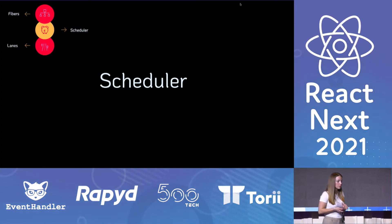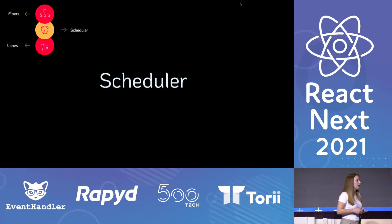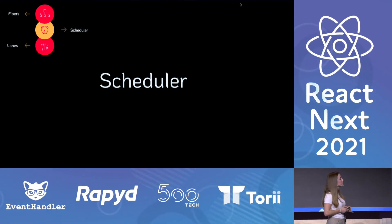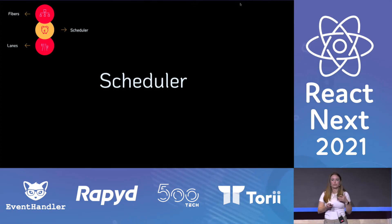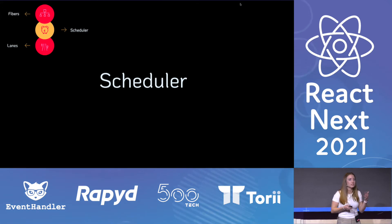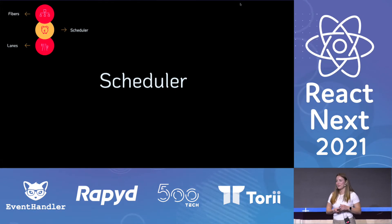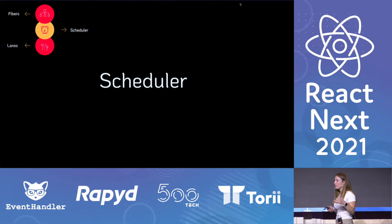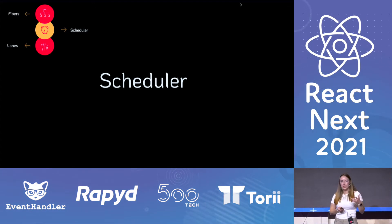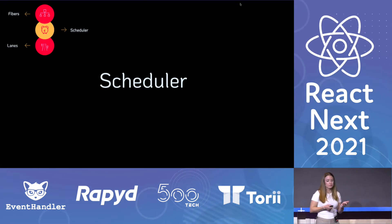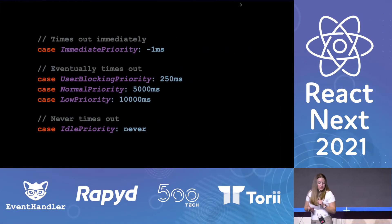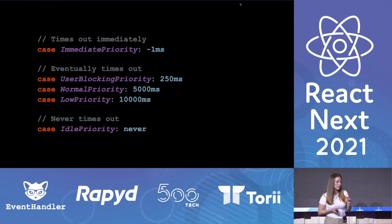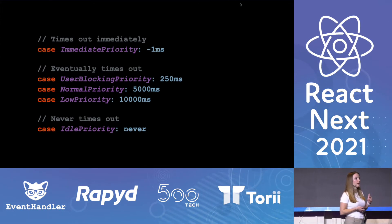The second building block from React fiber was the scheduler. This is a very important building block because this is basically what does the prioritization of tasks. When I'm talking about different task priorities, I mean there is a difference for our users on our app — if I'm clicking or showing an animation, I want my user to see an immediate response. The scheduler assigns each task a priority according to the time it has to be shown on the screen.